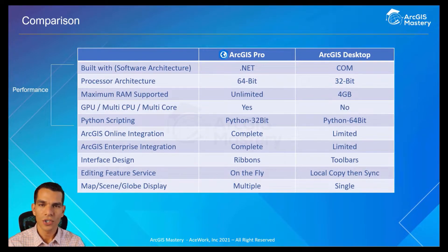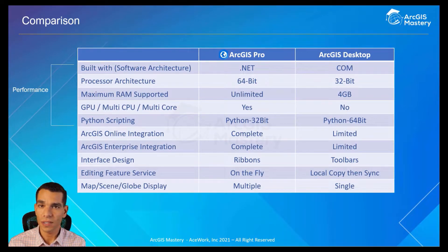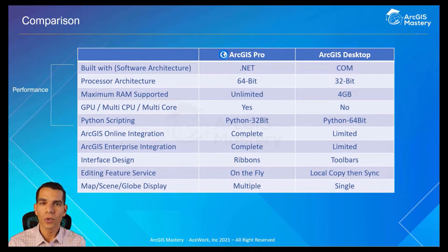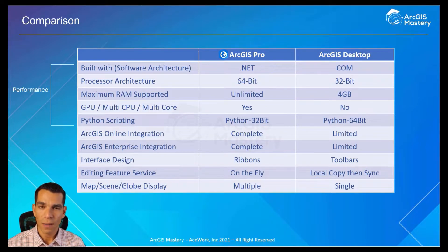ArcGIS Pro is built on .NET, while ArcGIS Desktop is built on COM. ArcGIS Pro can work on 64-bit processors, whereas ArcGIS Desktop can only work on 32-bit processors, which means ArcGIS Pro can work faster and use more CPU. When you work on ArcGIS Pro, you have unlimited use of RAM, but for ArcGIS Desktop it is limited to 4GB of RAM.